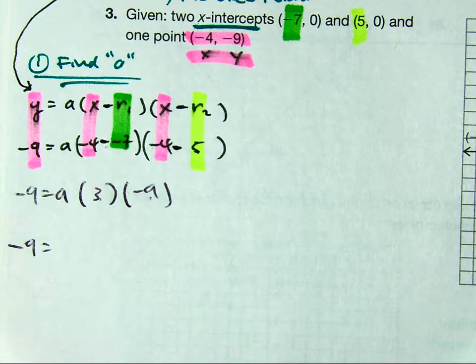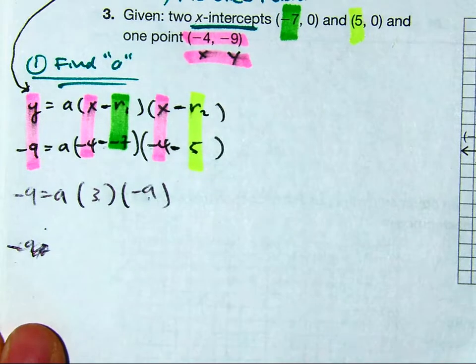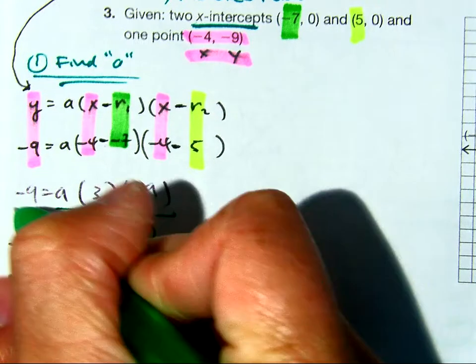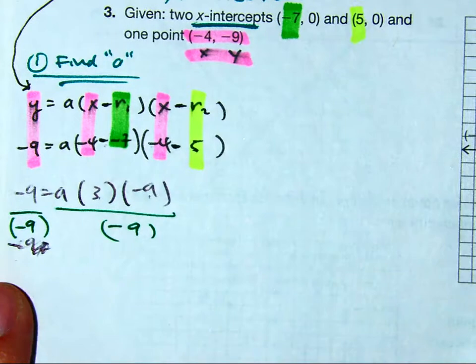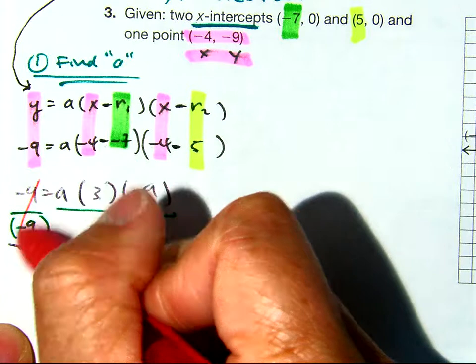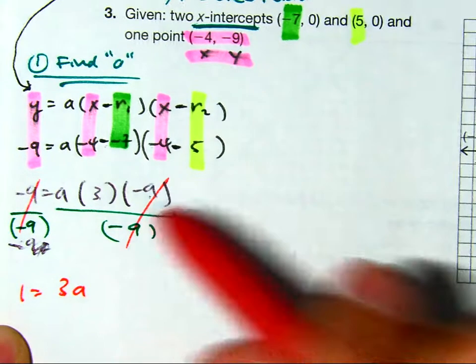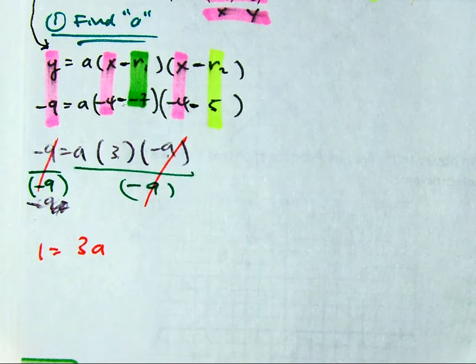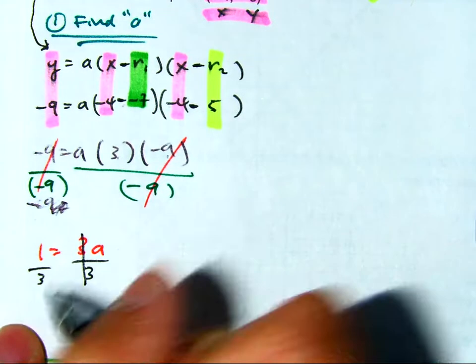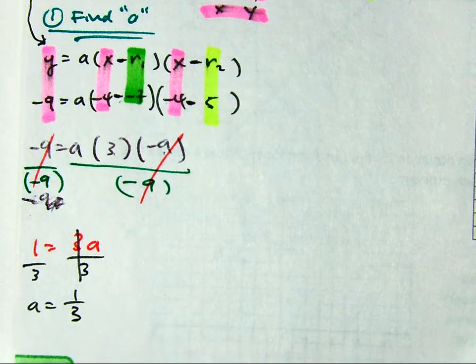Actually, if you think about this, this might be faster. I'd probably just divide both sides by -9. Do you see how it's a common factor? When I do that, I'm left with 1 equals 3 times a. Because these will also cancel. And then divide by 3. A is equal to 1/3.